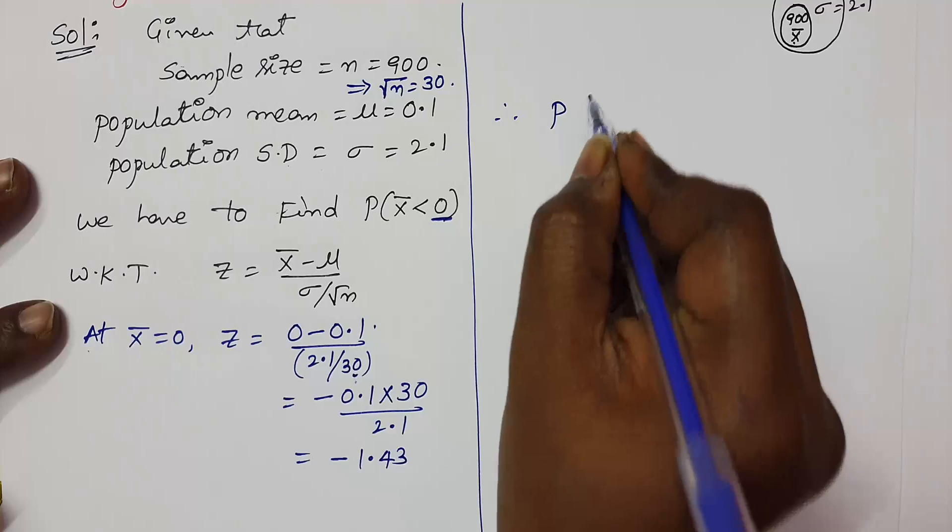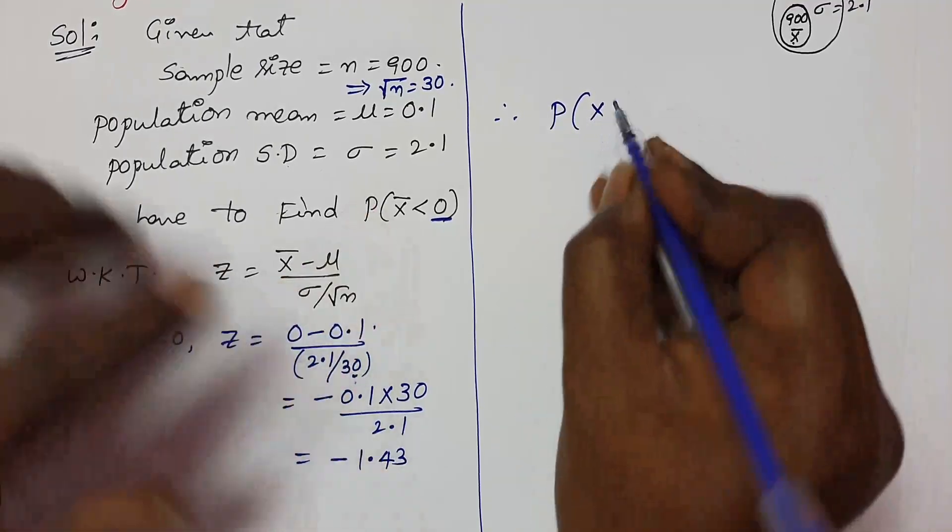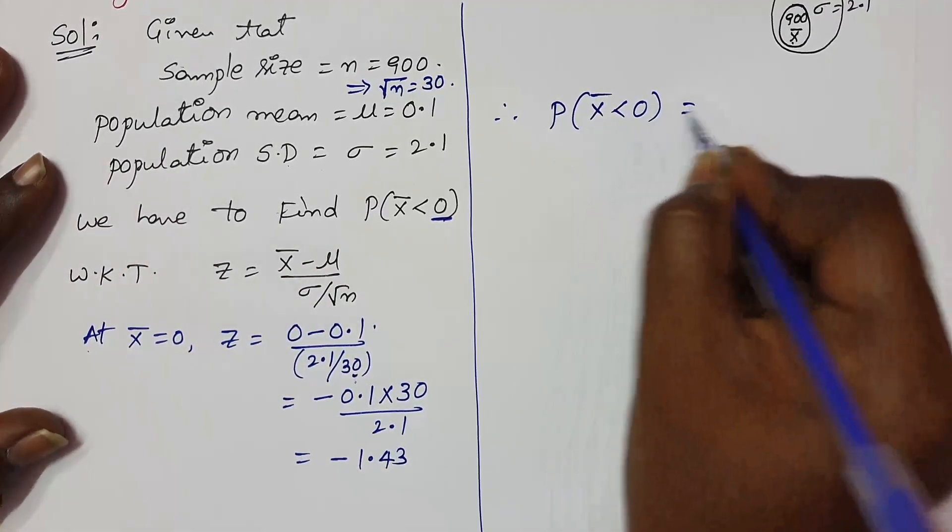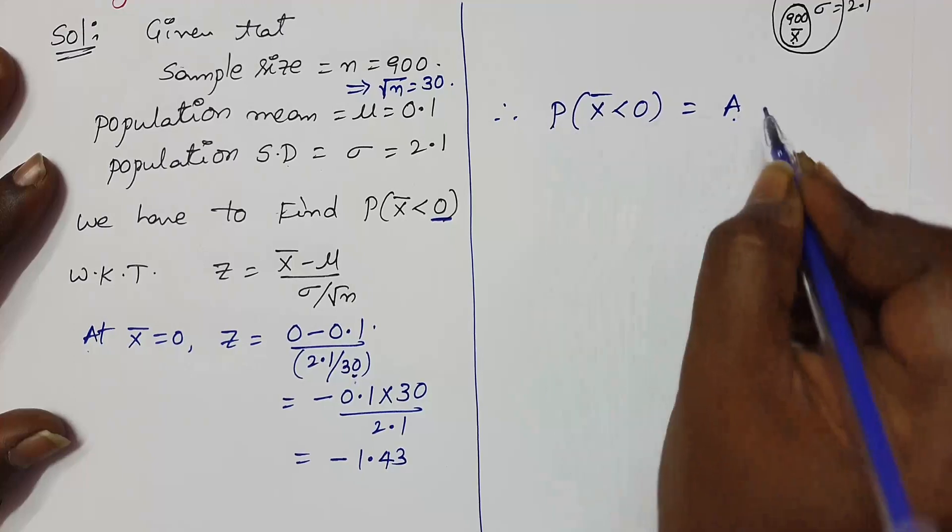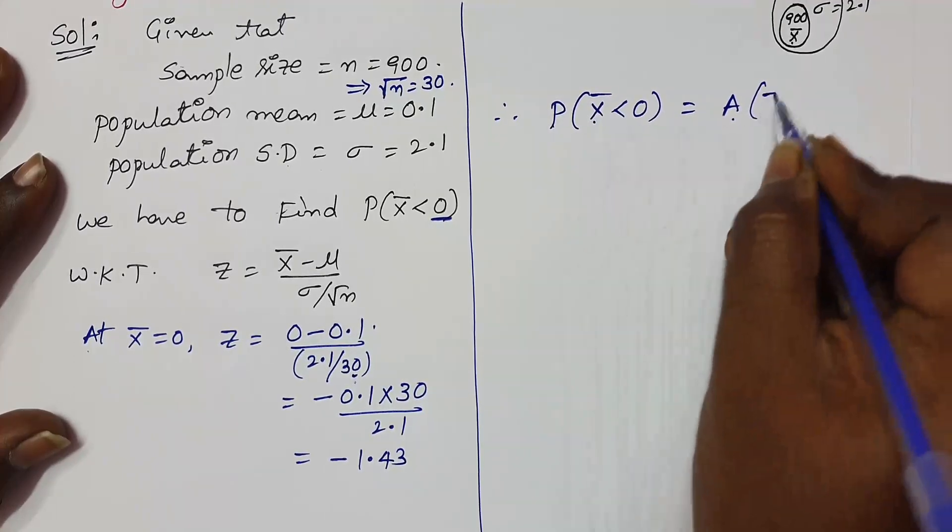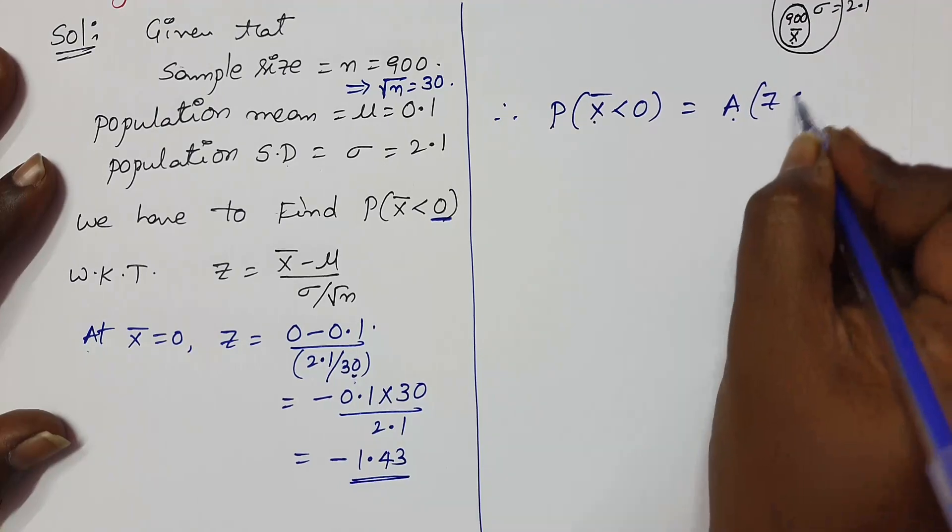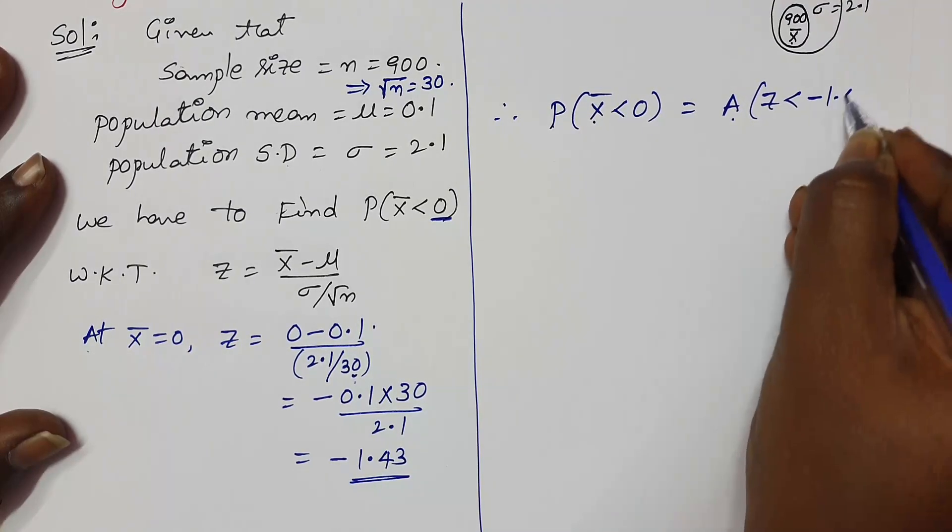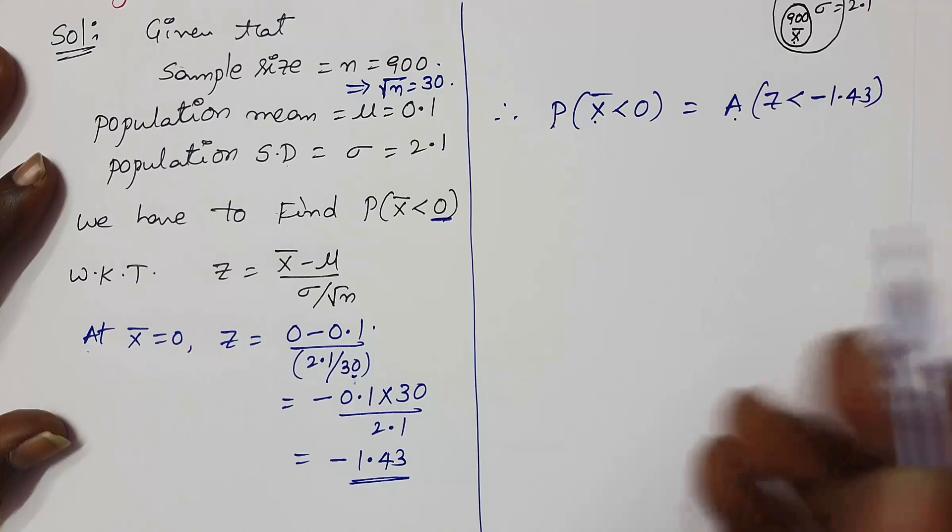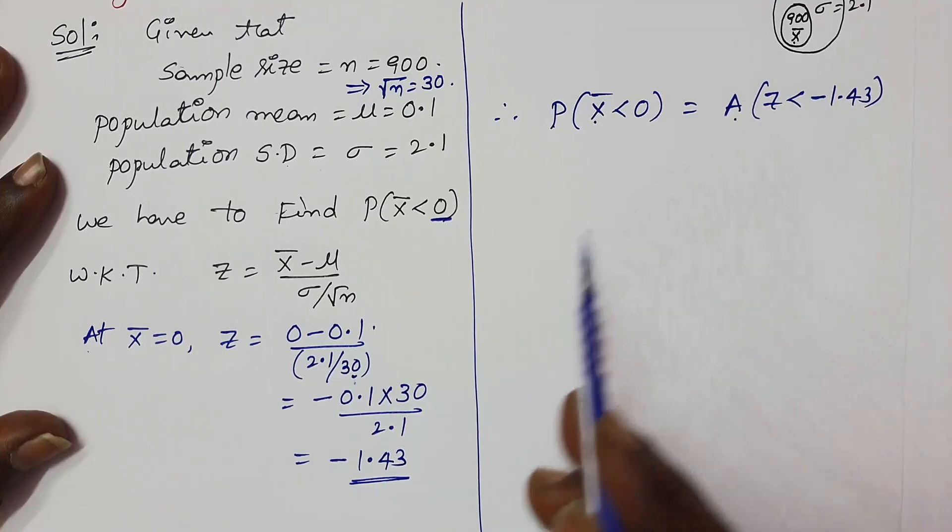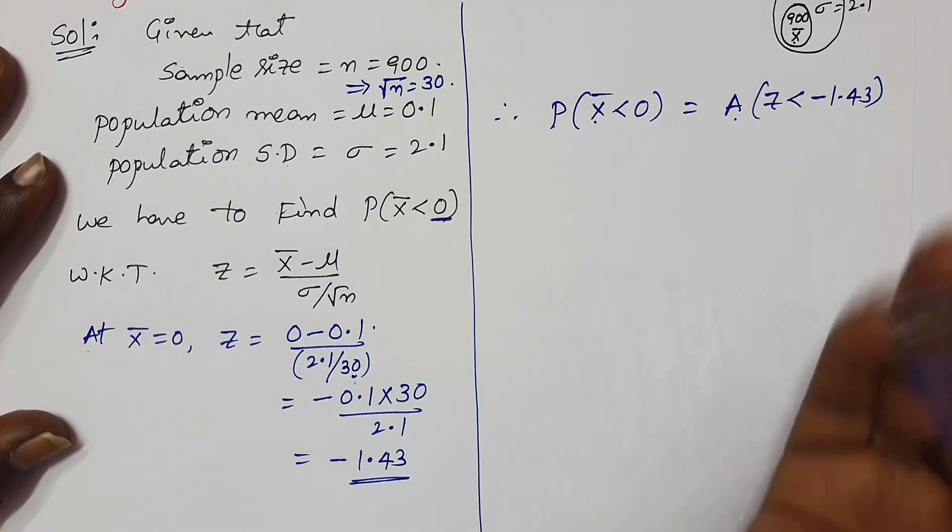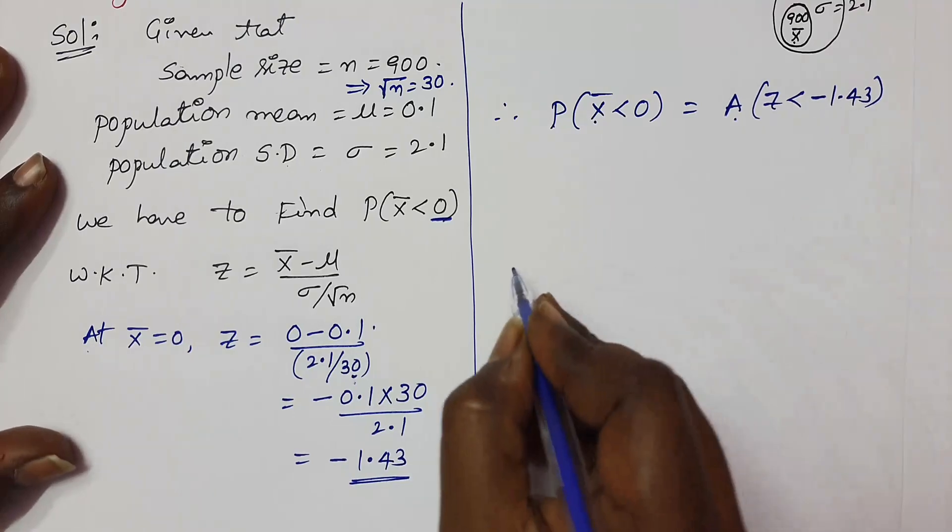So required probability becomes: probability of x̄ is less than 0 becomes area. Probability becomes area, and x̄ becomes z, and 0 becomes negative 1.43, so less than minus 1.43. So it means that we have to find out the area under the normal curve which is less than the negative 1.43.